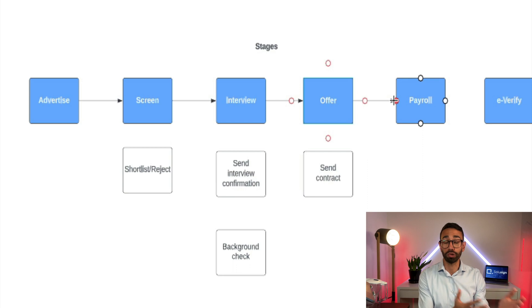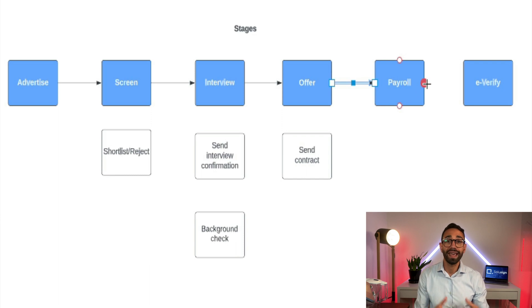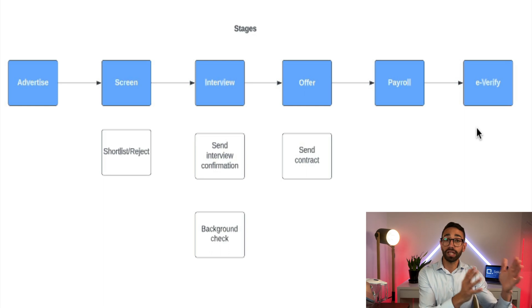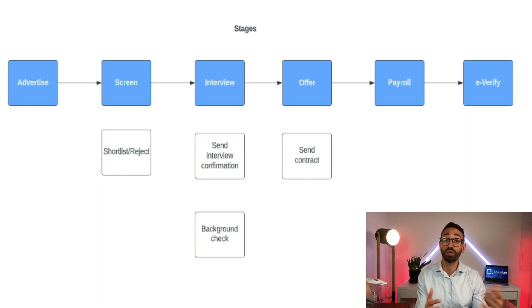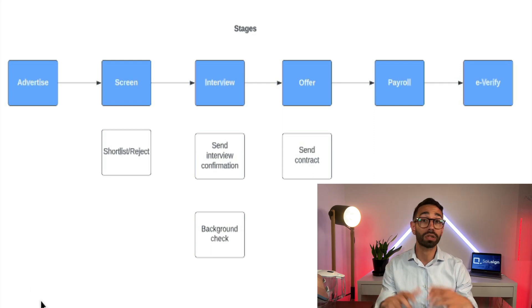If the candidate accepts, you'll need to send onboarding paperwork, including I-9, tax forms, bank information, and documentation collection. Then you'll need to verify working rights on E-Verify, set them up in the payroll system, and give them access to company resources. Depending on your company, you may have fewer or more stages, but within each stage, multiple actions need to be completed before you can move to the next stage. I call those 'stage actions,' and they need to be completed by you, the candidate, or someone else on the team.